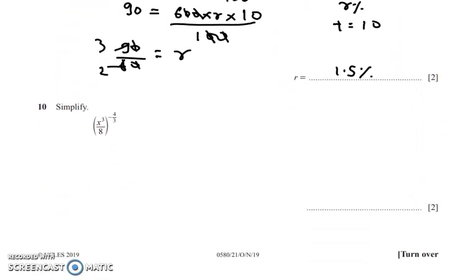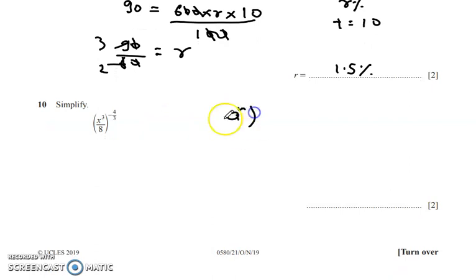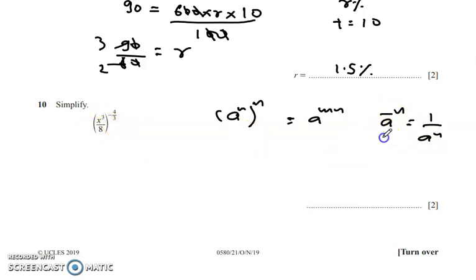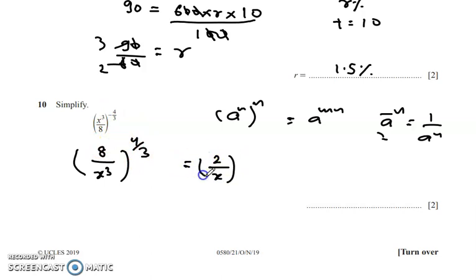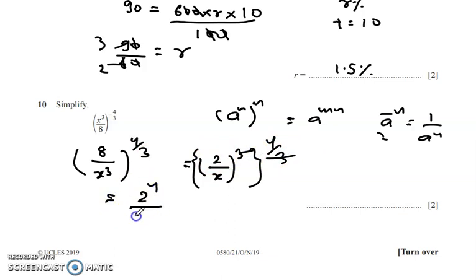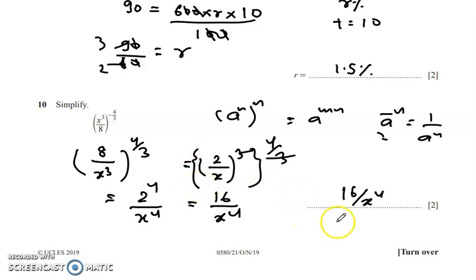Question 10: simplify using indices rules. We know (aᵐ)ⁿ = aᵐⁿ and a⁻ⁿ = 1/aⁿ. First, take the reciprocal to make the power positive: 8/x^(3·4/3). Then write as (2/x³)⁴. So 2⁴ = 16 and x³⁴ = x⁴, giving the final answer 16/x⁴, or equivalently 16x⁻⁴.